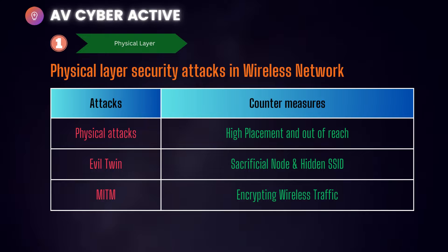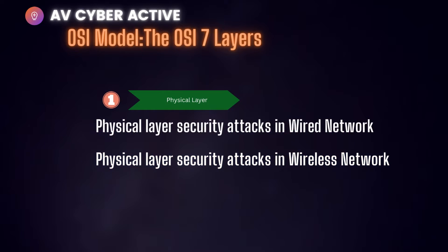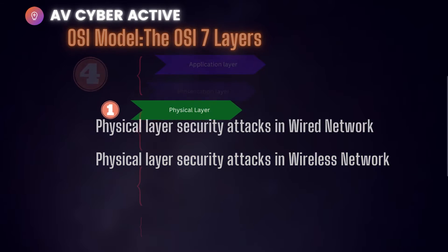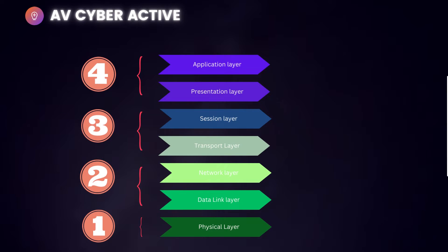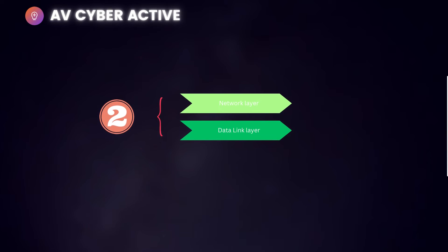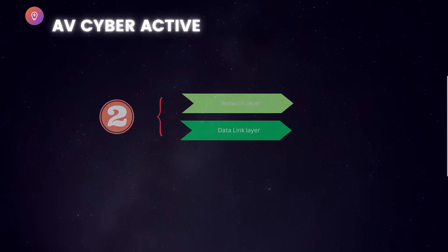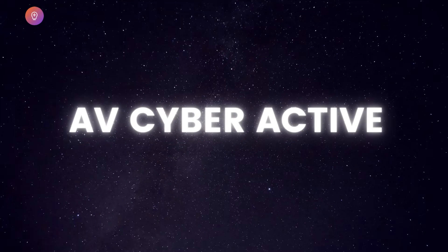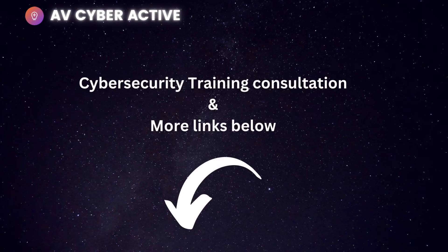That covers how security attacks can be performed at the physical layer on both wired and wireless networks, and how they can be prevented using various countermeasures. This is only part one of the four-part video series. In the next video, we will talk about layers two and three of the OSI model, the attacks, and how they can be mitigated. Let me know in the comments which type of attack or protocol abuse you'd like me to cover for each layer.